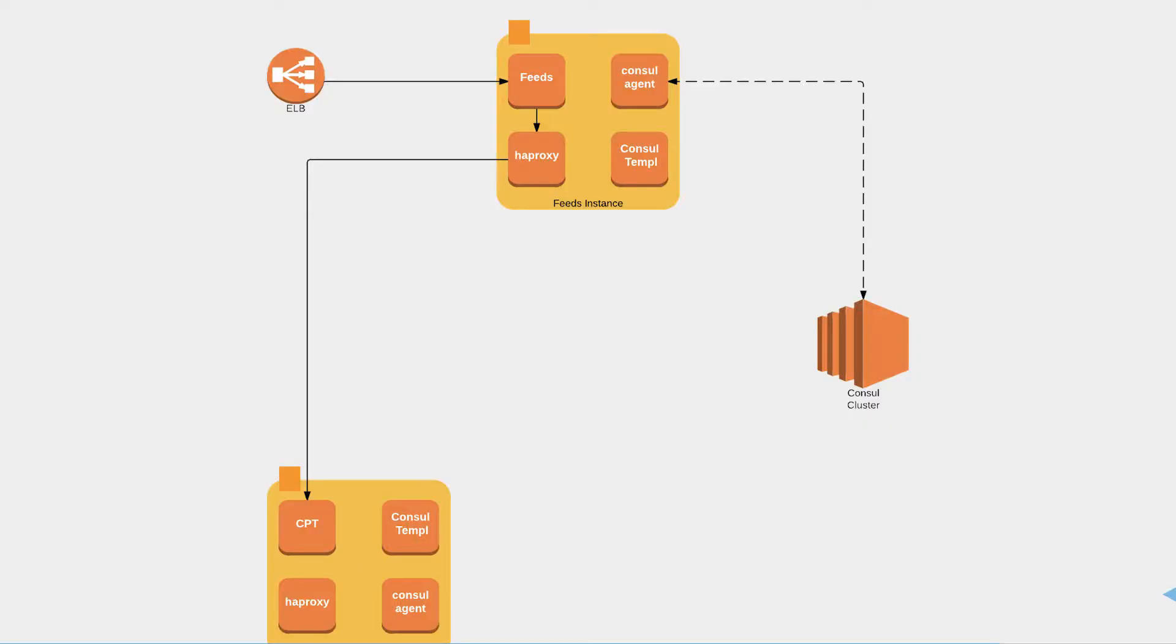So let's look at a diagram. On the feeds box, you've got the feeds component itself running, as well as the Consul agent, Consul Template, and HAProxy. And we've got a CPT box down at the bottom. So in order to bring a new CPT node into service, we just spin it up. It registers itself with the Consul cluster, which triggers an update event to the agent running on the feeds box, which then triggers an HAProxy update via Consul Template, which reloads HAProxy and brings the new node into service. It's all automated, it all happens within a fraction of a second.